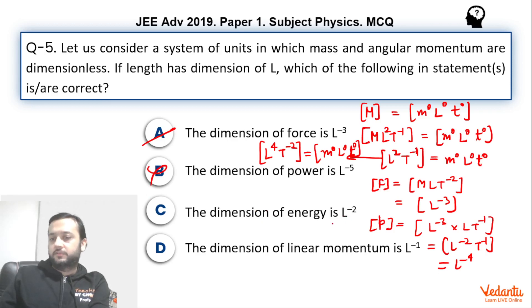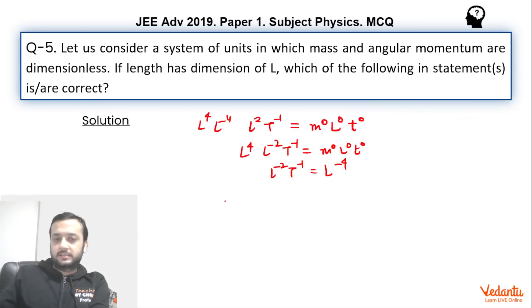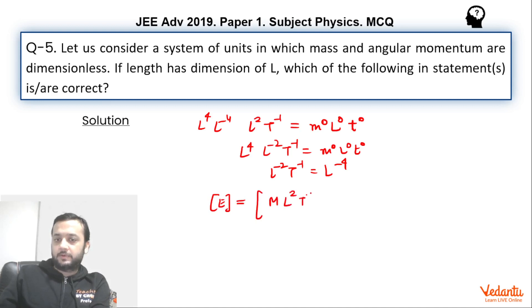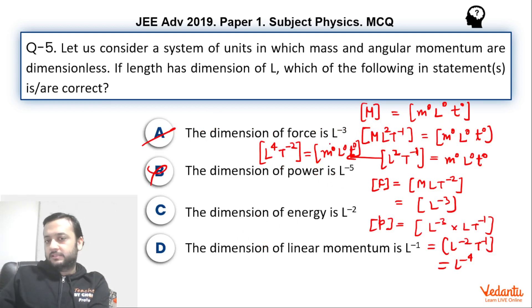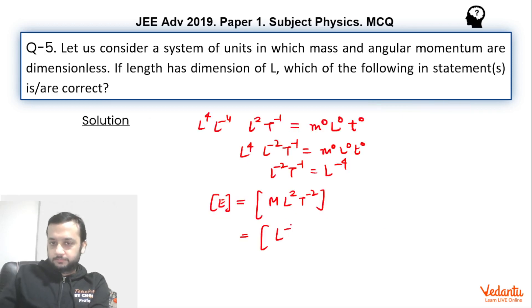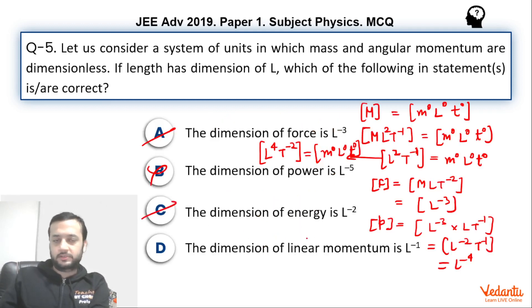For the dimension of energy, energy is ½Mv², and ½ has no dimension. So we consider M·V², where V² is L²·T⁻². Mass is dimensionless, so we ignore it, leaving L²·T⁻². From the key relation, if we take L² to this side, we are left with L²·T⁻², which corresponds to L⁻². Hence energy has a dimension of L⁻², which matches the option.